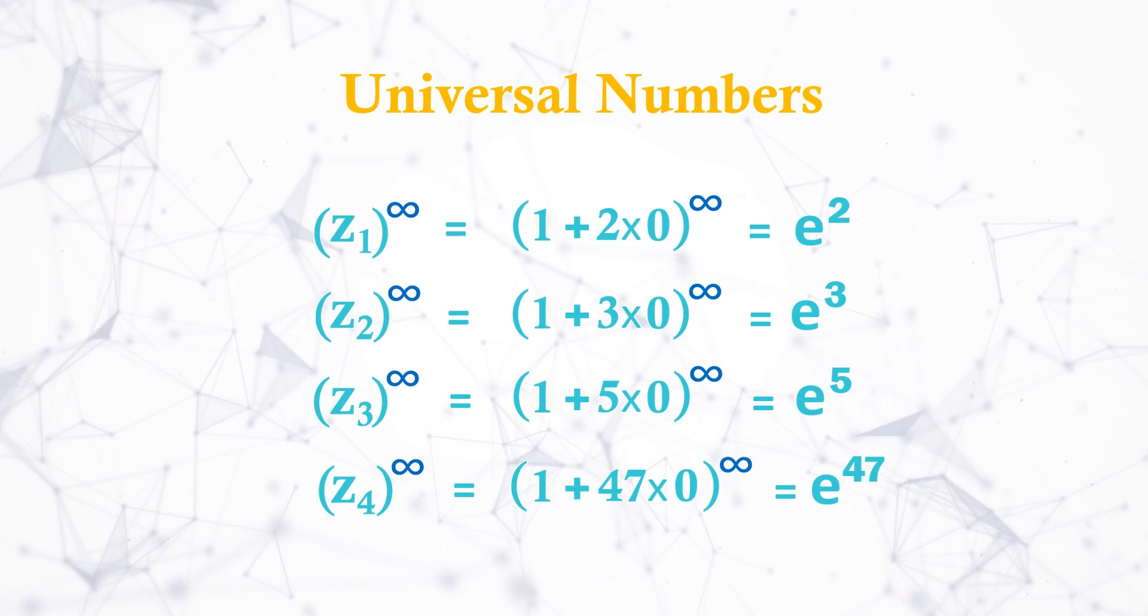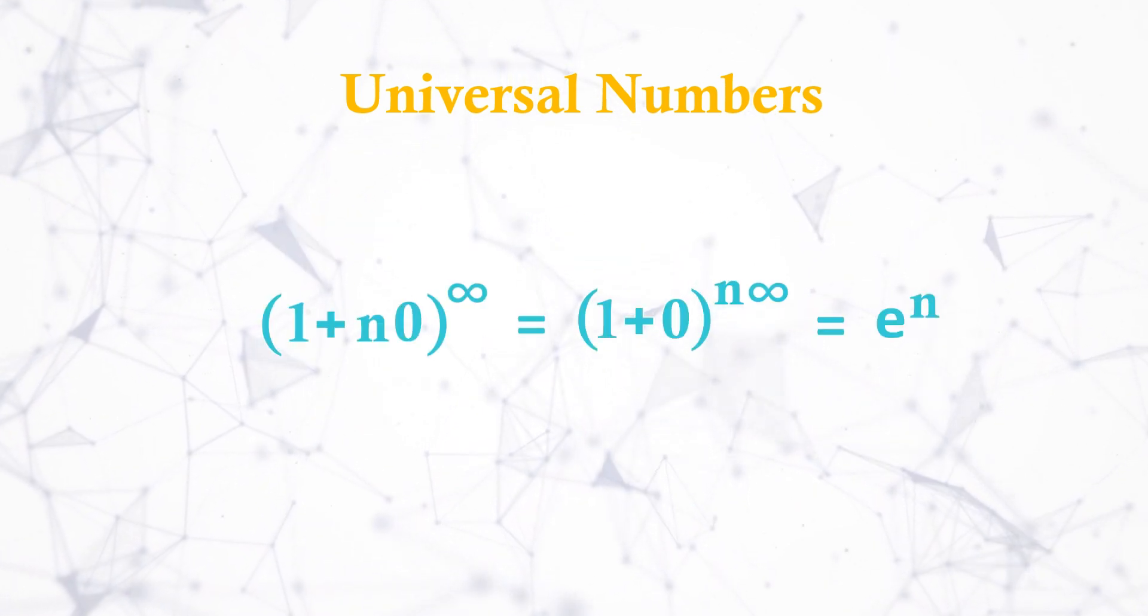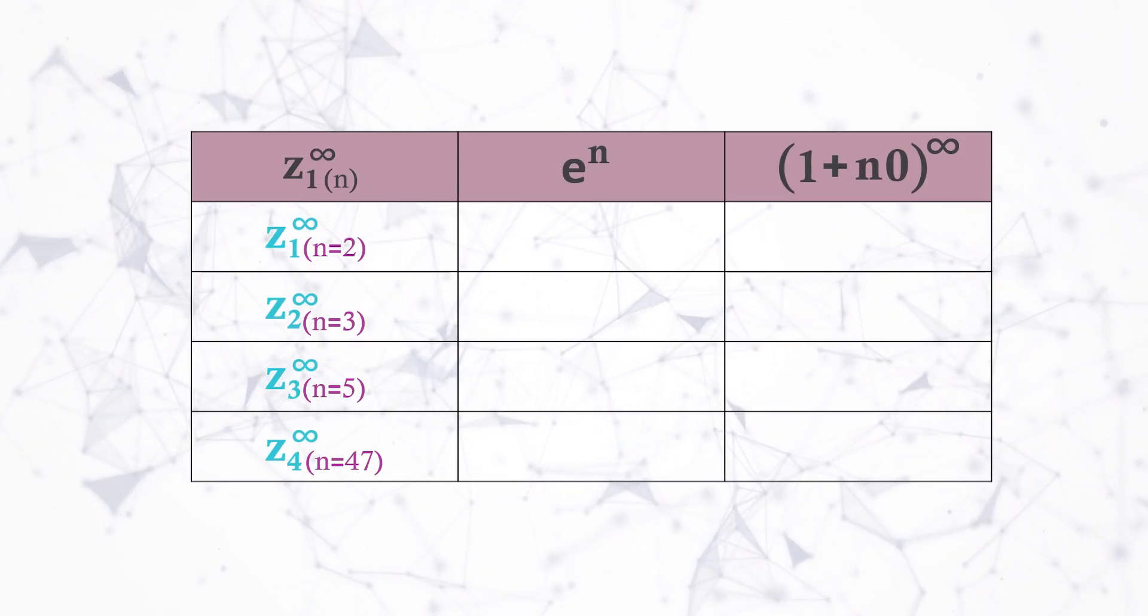And if this is true, we can observe this in real numbers too using limit concept. So we can replace all 0 values with negligible value and calculate in Wolfram to see if values are matching. Let's get the value of e^n for given n values.